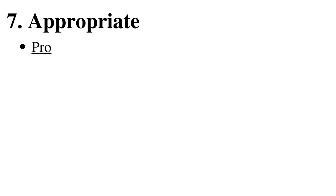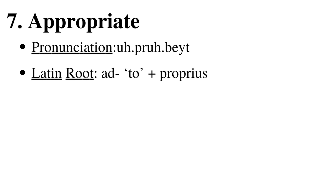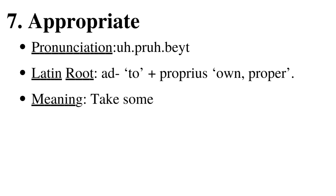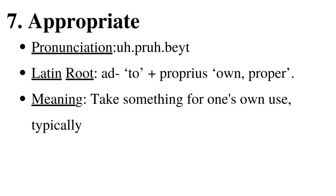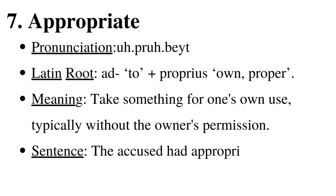7. Appropriate. Appropriate has been derived from Latin words 'ad' which means 'to' and 'proprius' which means 'own or proper'. Appropriate means take something for one's own use, typically without the owner's permission. For example, the accused had appropriated the property.